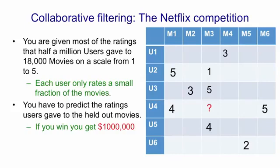You can draw the ratings in a big matrix, where we have movies across the top and users down the side. For example, user 2 gave a rating of 5 to movie 1 and a rating of 1 to movie 3. User 4 gave a rating of 4 to movie 1, and the question is what rating did he give to movie 3? You might decide he's quite like user 2 because he rated movie 1 the same way, so maybe like user 2 he hated movie 3. On the other hand, user 4 liked movie 6, so maybe he likes all the movies. By the time you've done that much reasoning, you realize you'd better use some statistics.